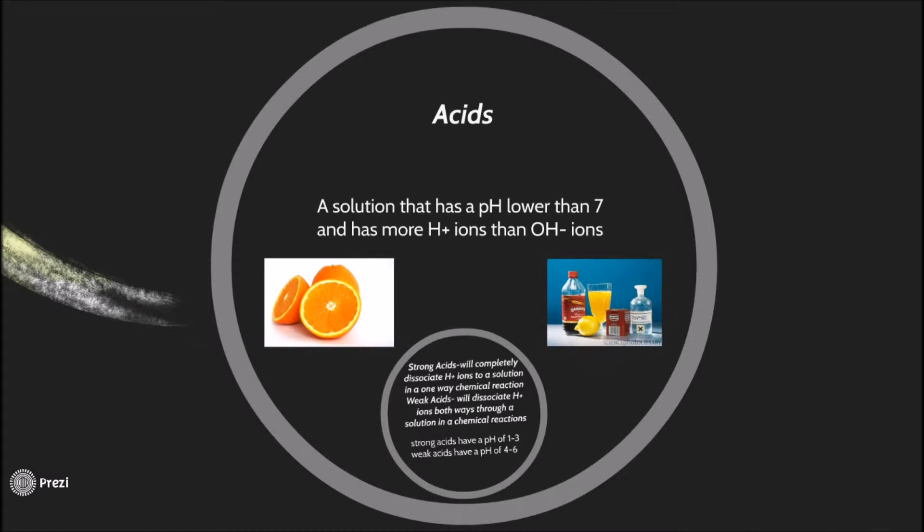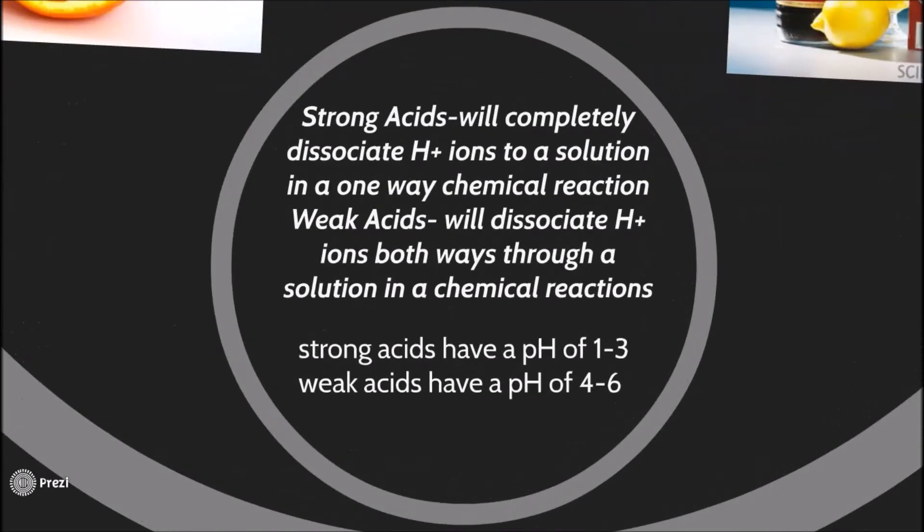Acids. A solution that has a pH lower than 7 and has more H ions than OH ions. Strong acids will completely dissociate H ions to a solution in a one-way chemical reaction. Weak acids will dissociate H ions both ways through a solution in a chemical reaction. Strong acids have a pH of 1 to 3. Weak acids have a pH of 4 to 6.